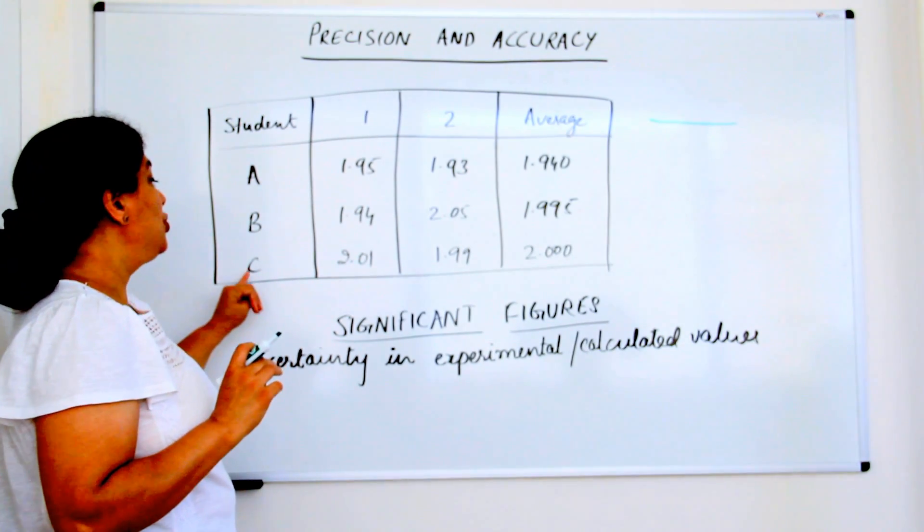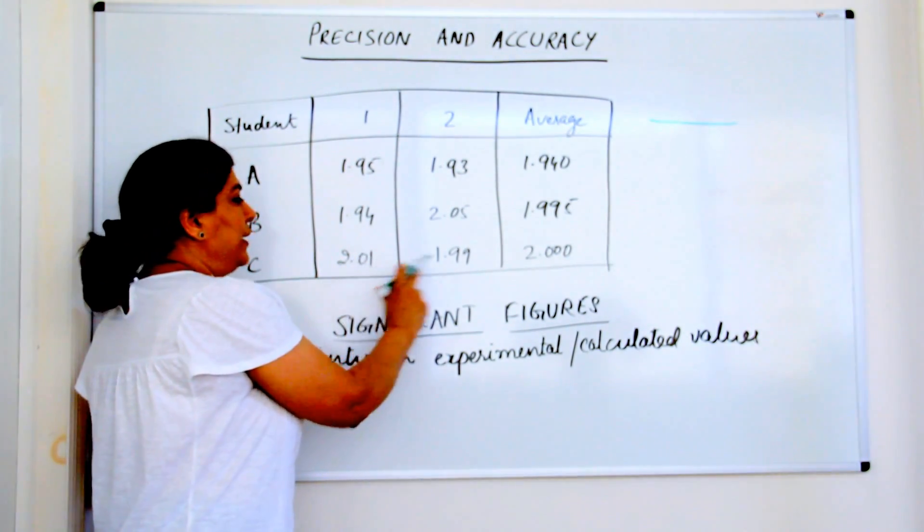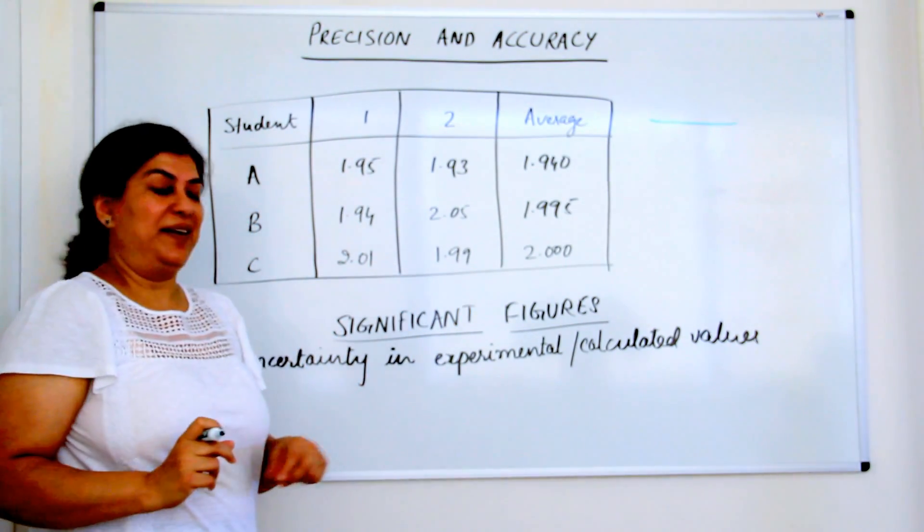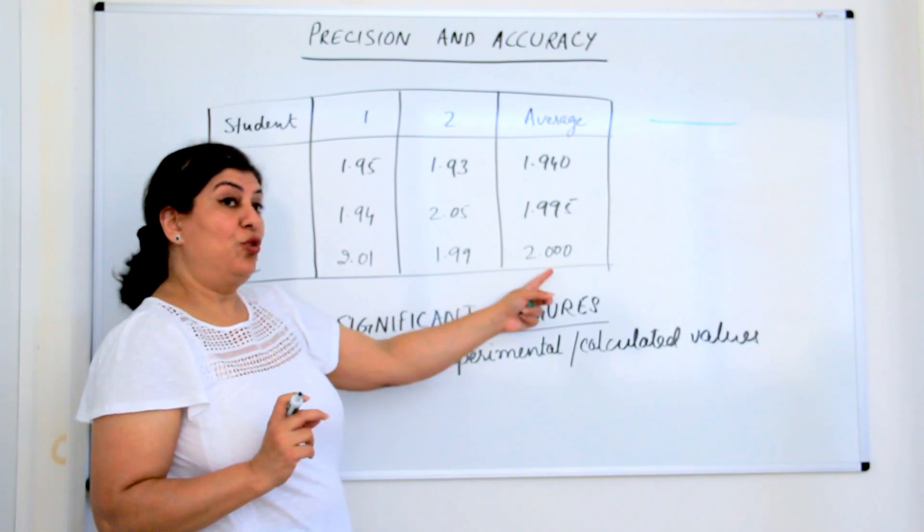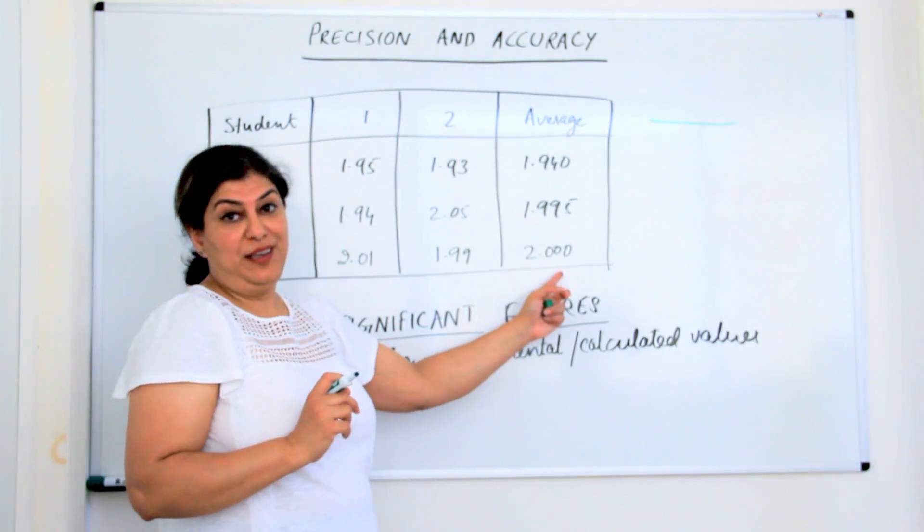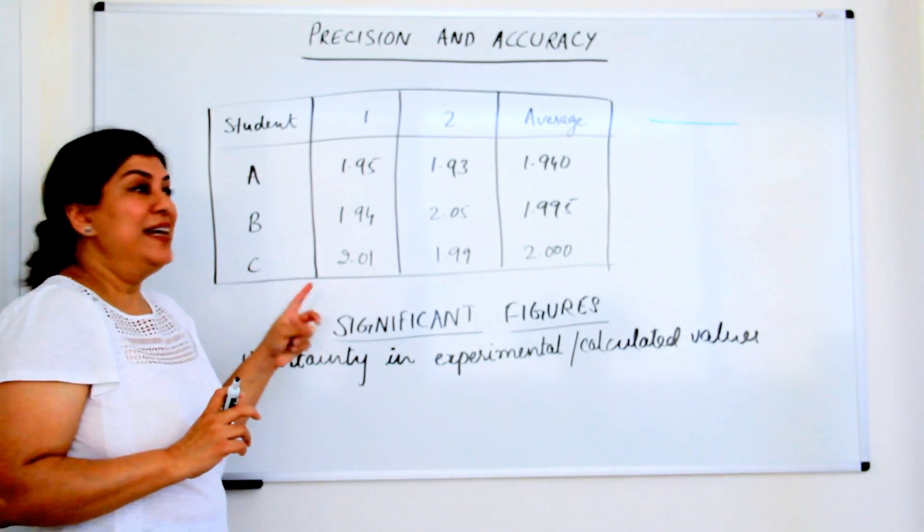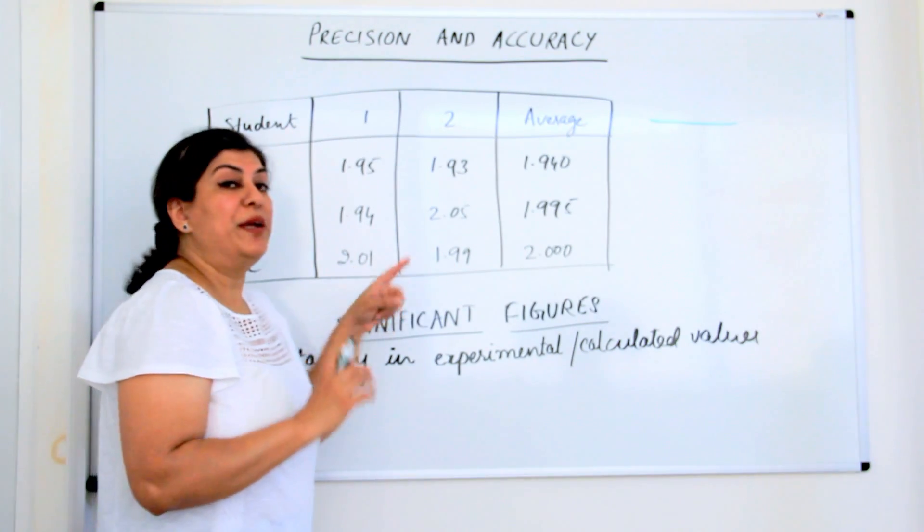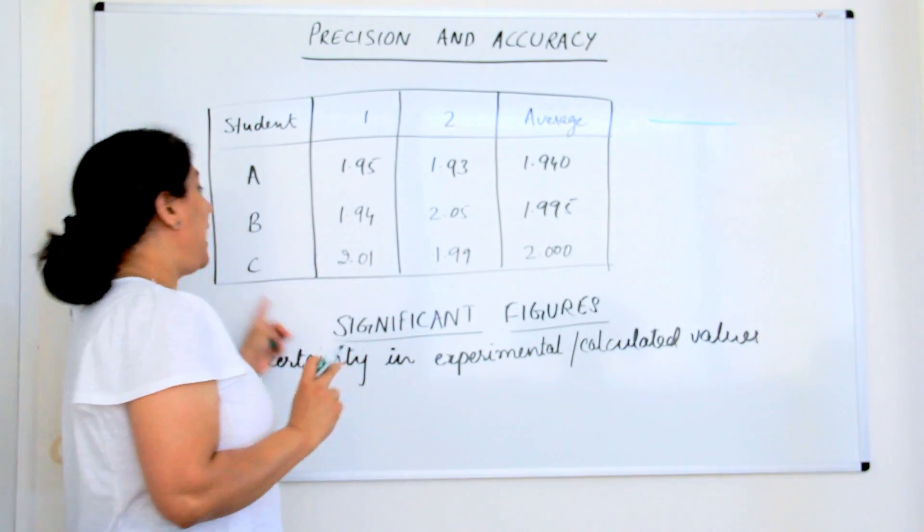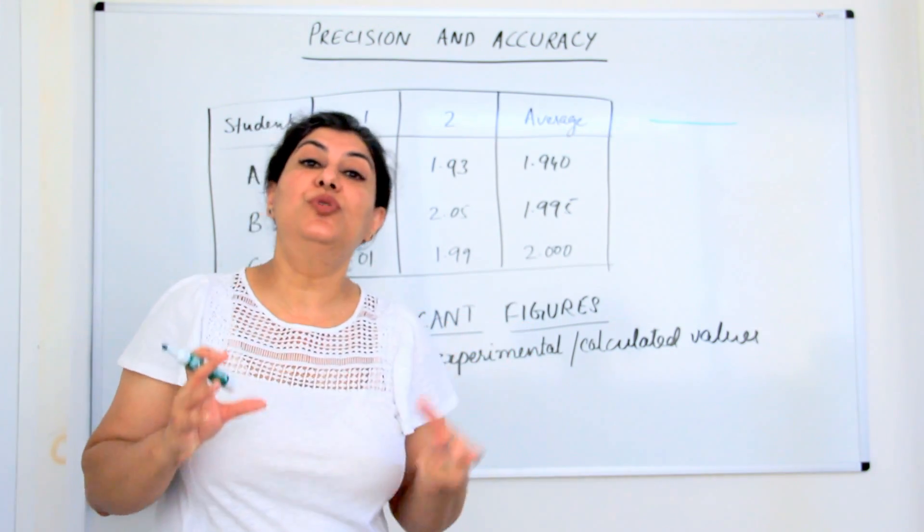The third reading, the third student carries out the readings and his readings are 2.01 and 1.99. Both are close to each other and they are also very close to the actual reading which is 2.00. So student C is both precise. Precision means how close are the measurements to each other and accuracy is how close is the result to the true result.